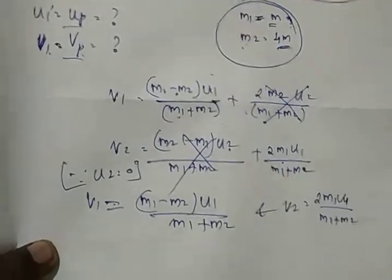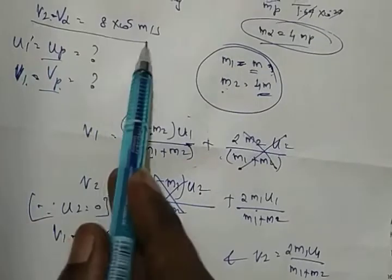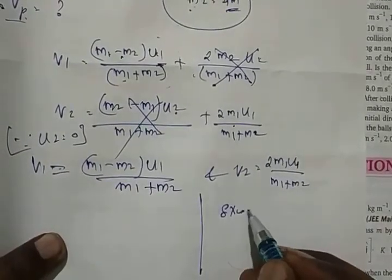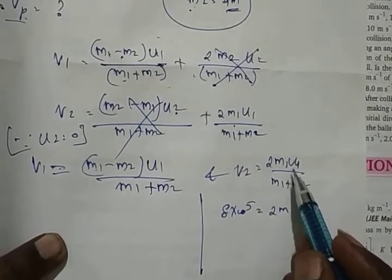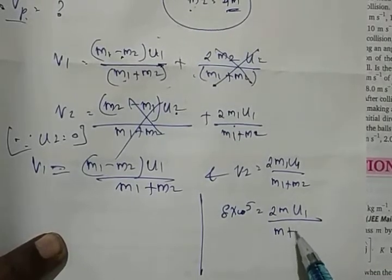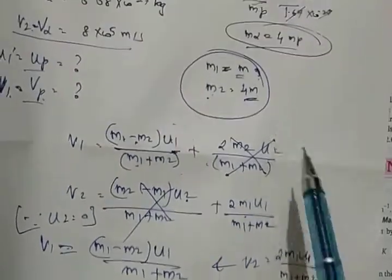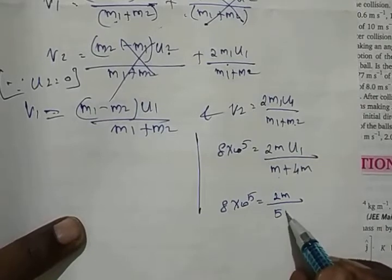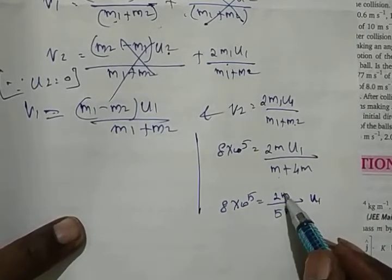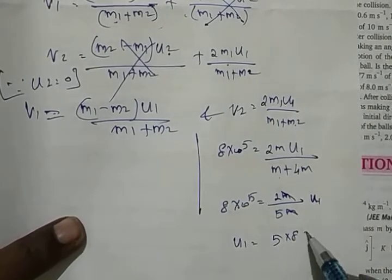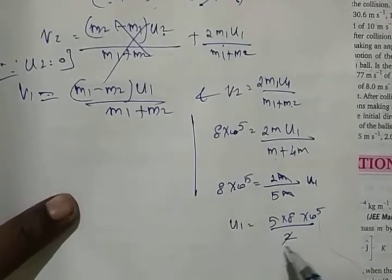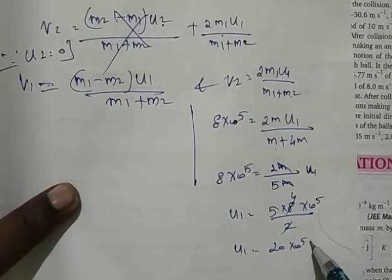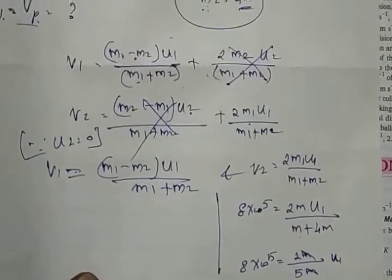V2 = 8×10⁵ m/s is already given. Using V2 = 2M·U1 / (M + 4M) = 2M·U1 / 5M = 2U1/5, so 8×10⁵ = 2U1/5, giving U1 = 5×8×10⁵/2 = 20×10⁵ = 2×10⁶ m/s. That is the initial velocity of the proton.